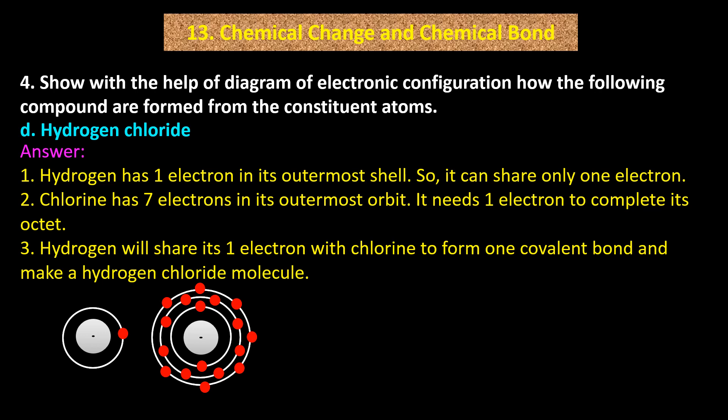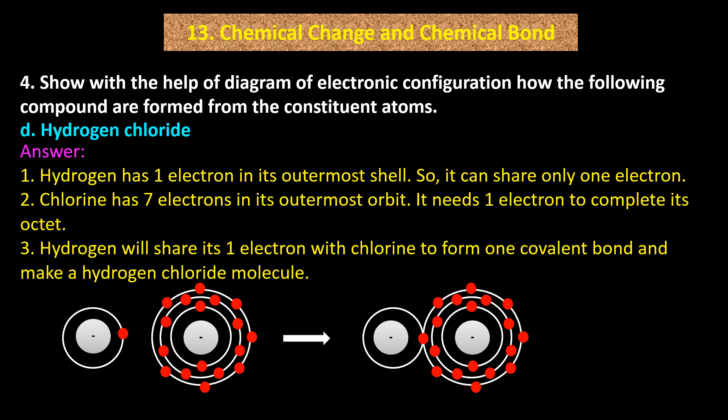Diagram: Hydrogen with one electron in its outermost shell; Chlorine with 2 electrons in its 1st shell, 8 electrons in its 2nd shell, and 7 electrons in its 3rd (outermost) shell. Hydrogen shares its one electron with chlorine's outermost shell of seven electrons, forming a covalent bond. Result: Hydrogen + Chlorine → HCl.